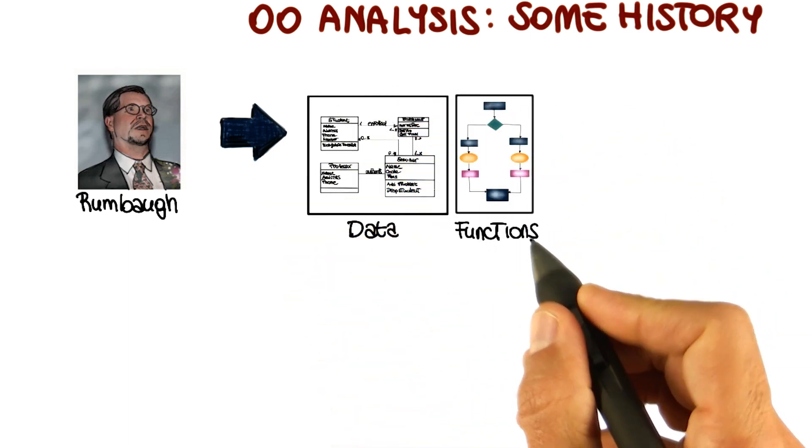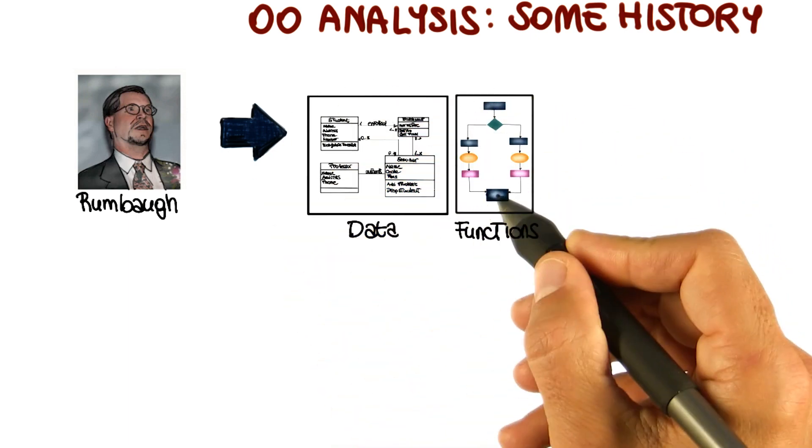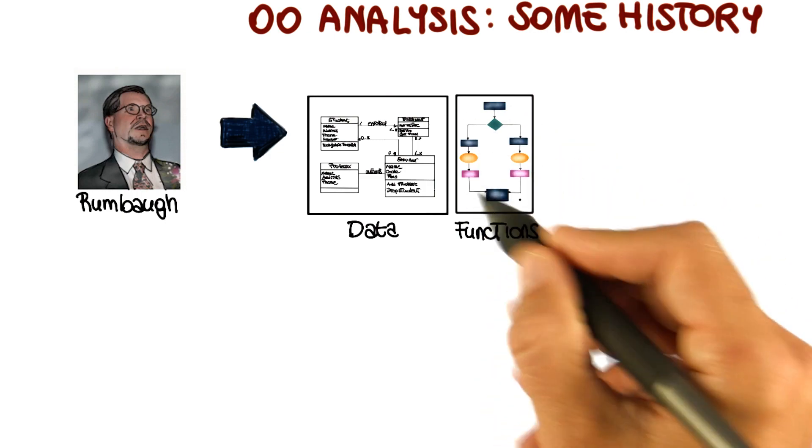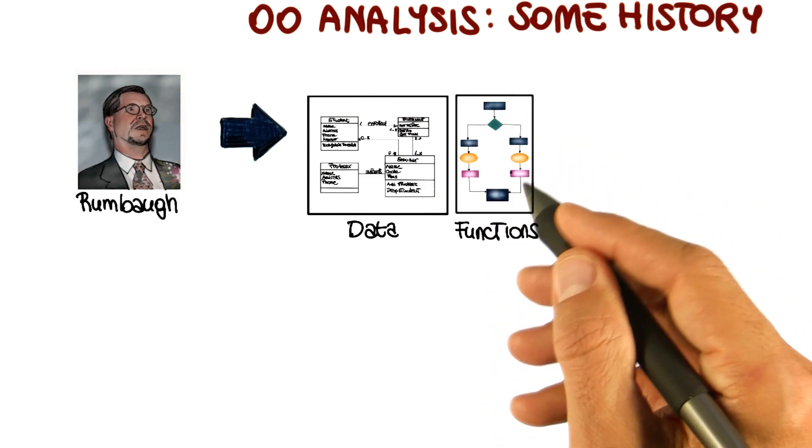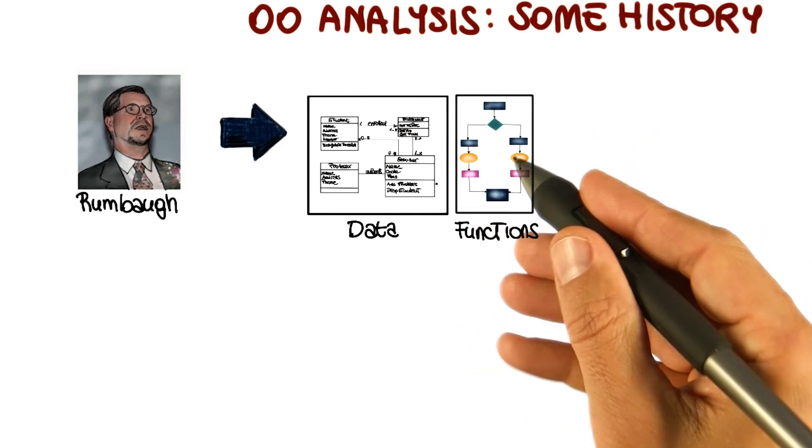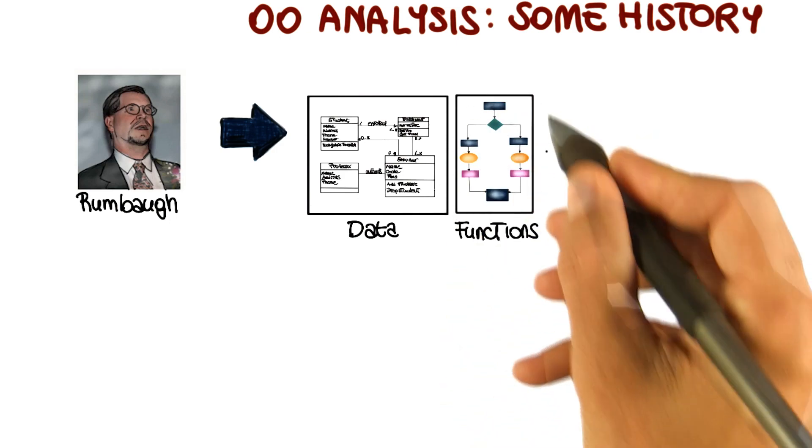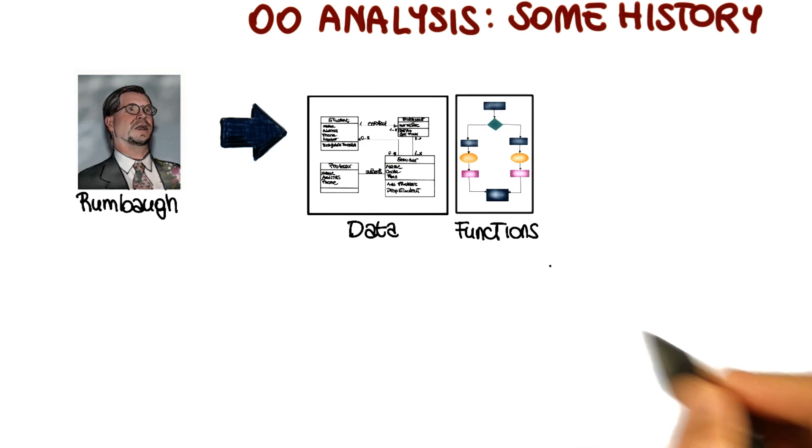The second aspect has to do with functions. Data flow diagrams were used to represent the functional aspects of the system, where each function became a method in a class. This is called the functional model.